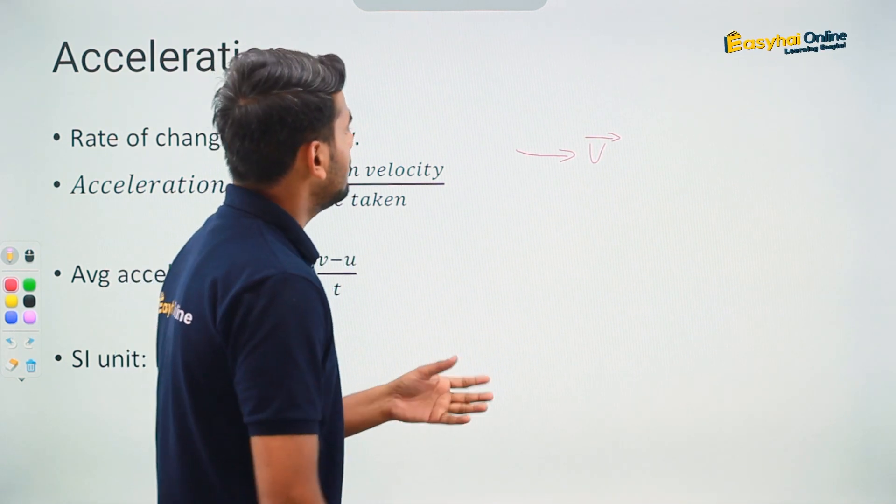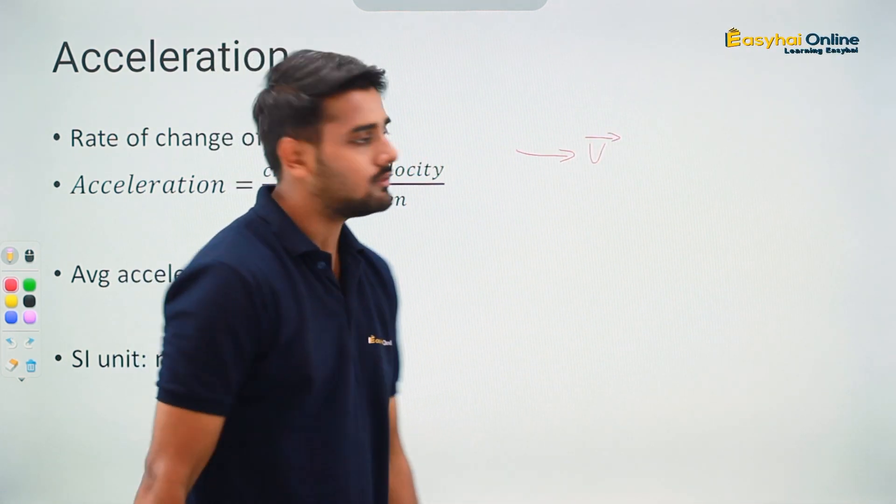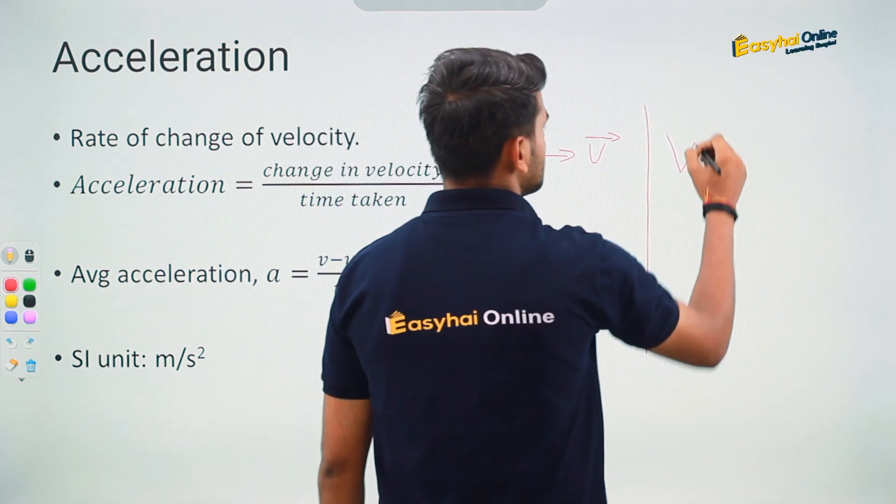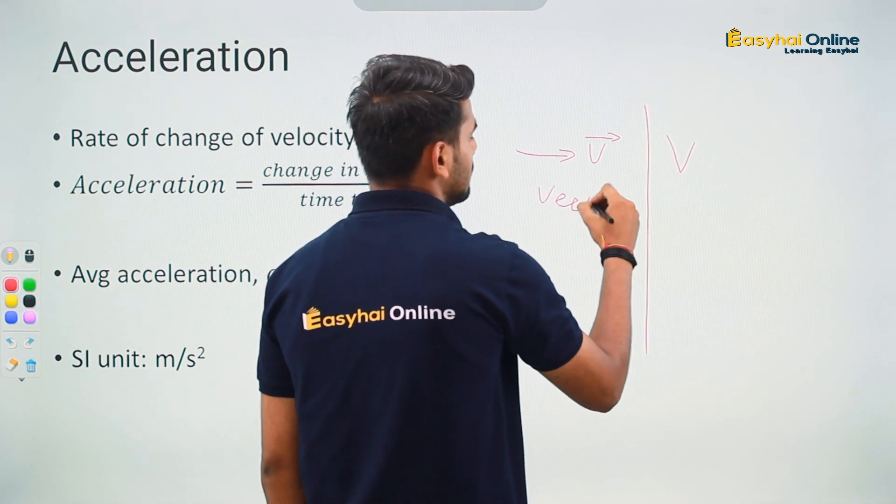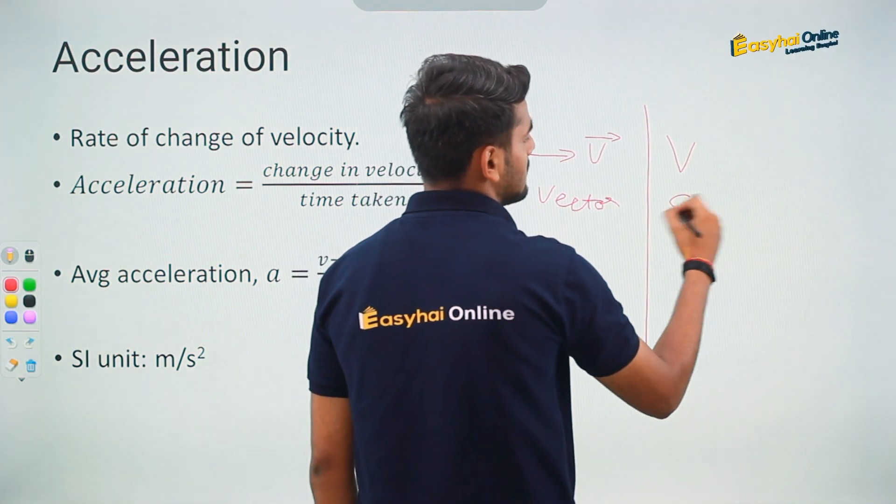Now, you need to keep in mind that when we were learning about velocity, we also knew something known as speed. This is a vector, this is a scalar.